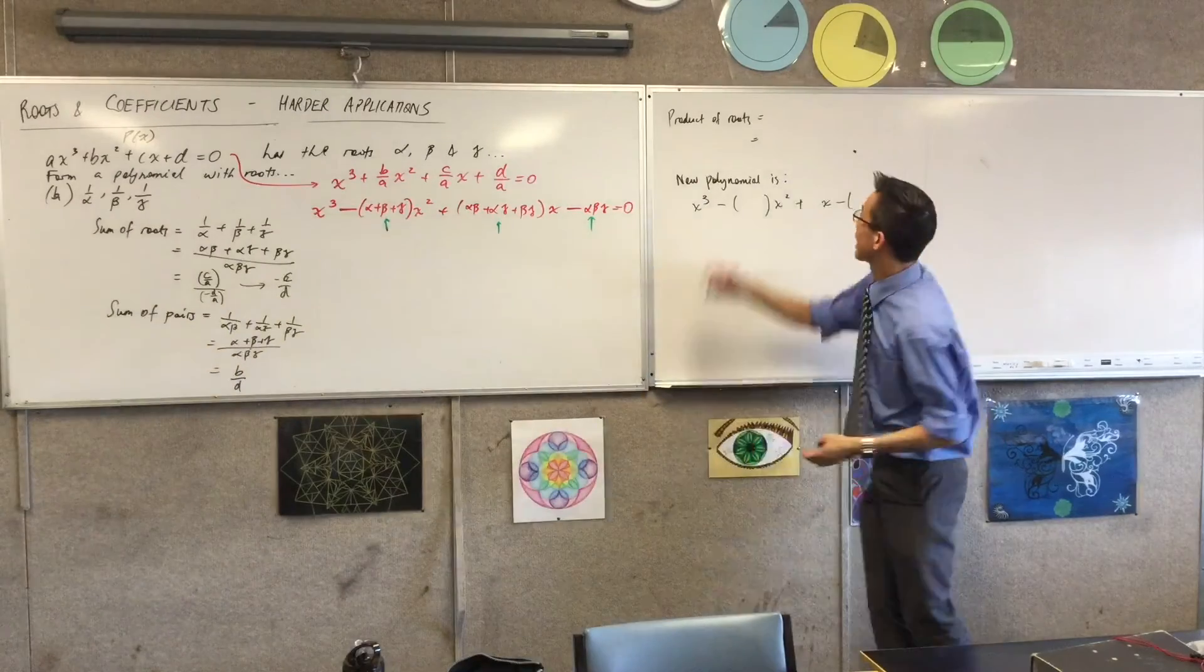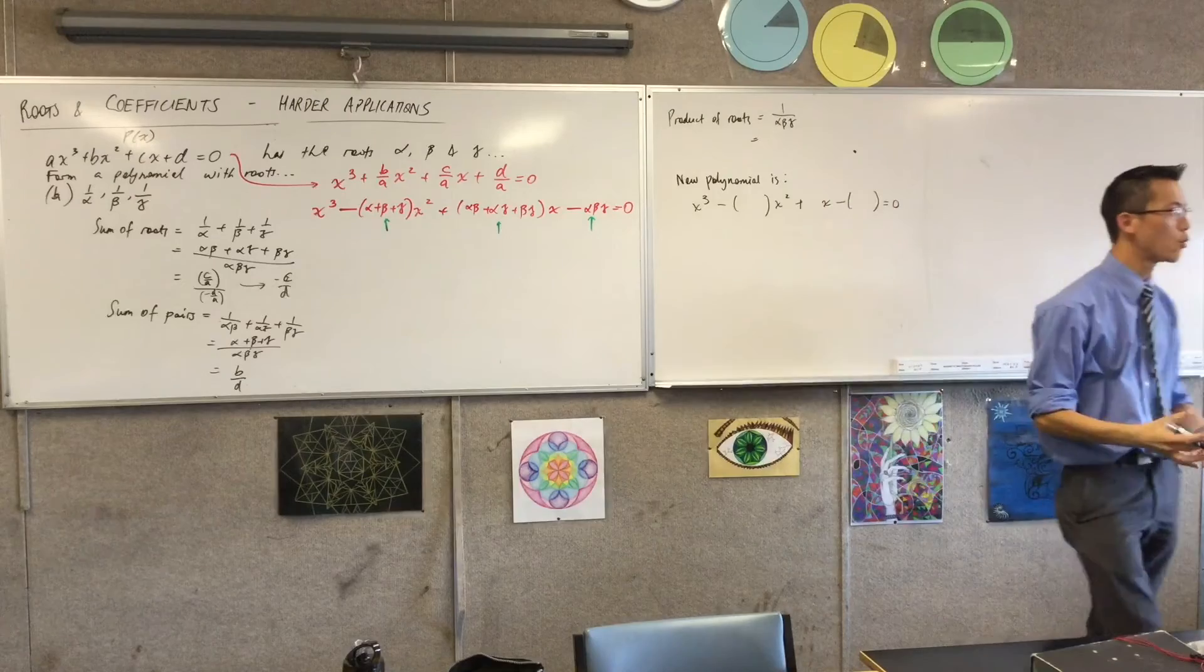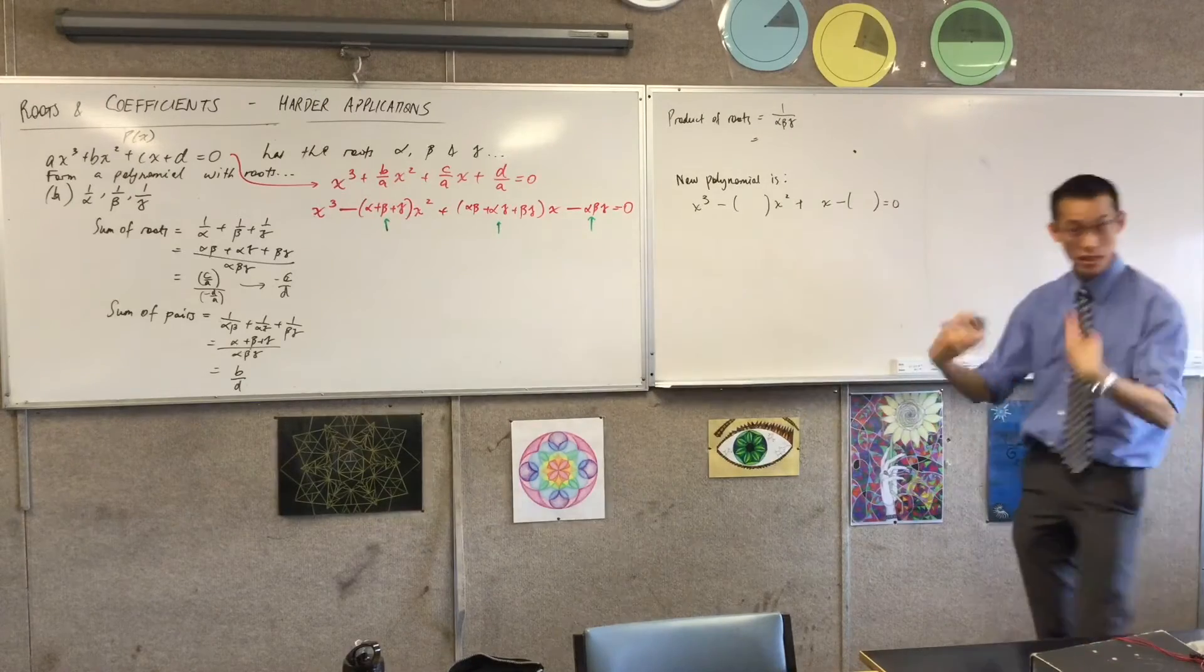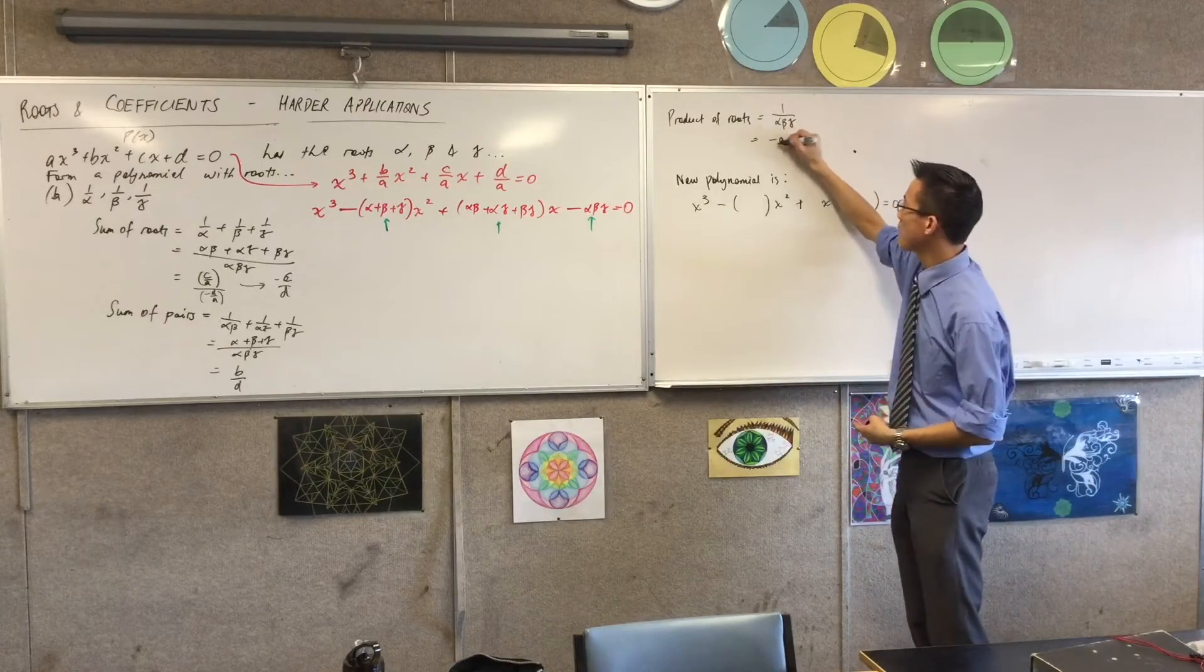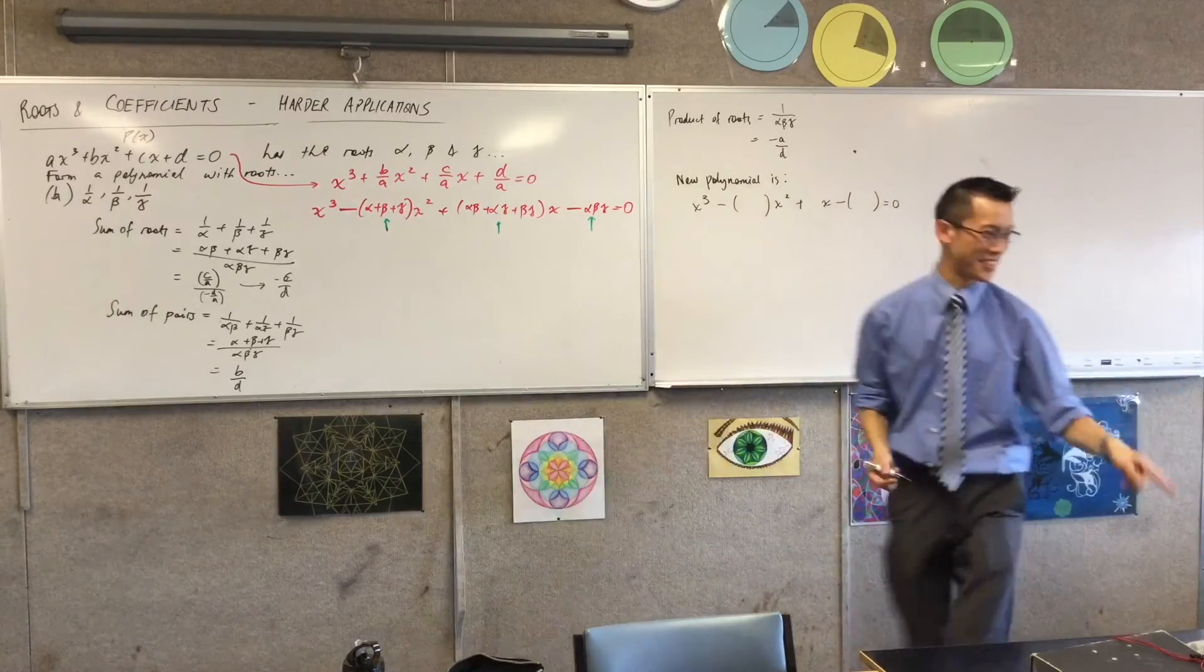Last one, the easiest one. When you multiply all of them, you're just getting that. We already know what alpha beta gamma is. So I just take the reciprocal, which I think is minus A on D. Did you get it? Okay, good. So we're almost there.